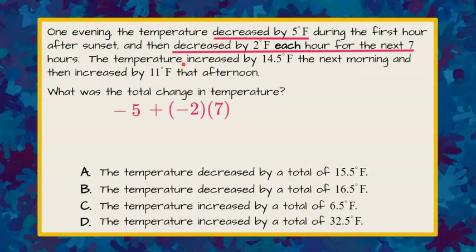Now we're going to go up to our problem and notice that the next thing that happened is it increased by 14 and a half degrees. So increase means add 14.5. The next morning it increased more by 11 degrees. So now we need to add on 11 degrees for that last bit.